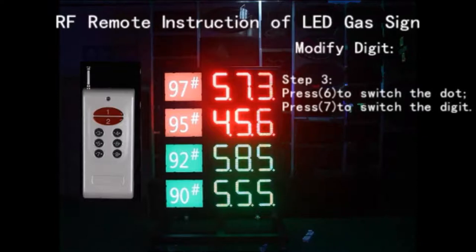Step 3. Press button 6 to switch the dot. Press button 7 to switch the digit.